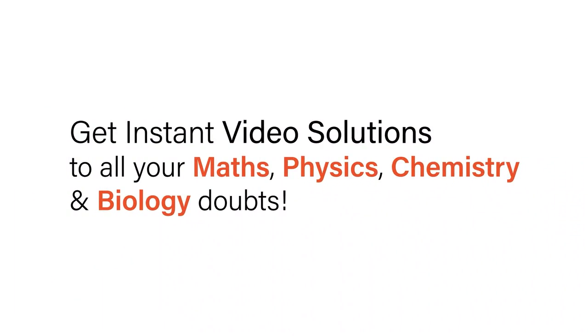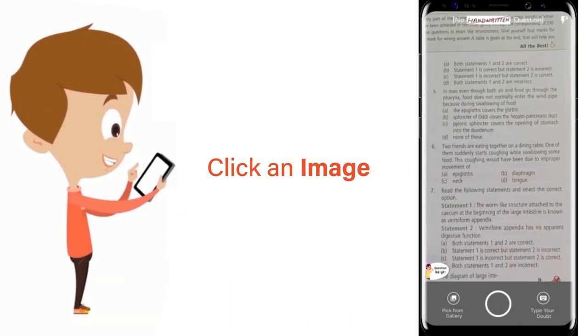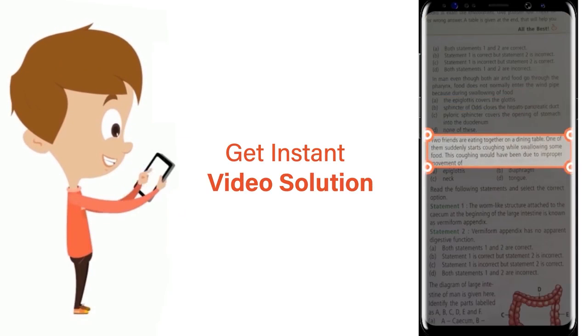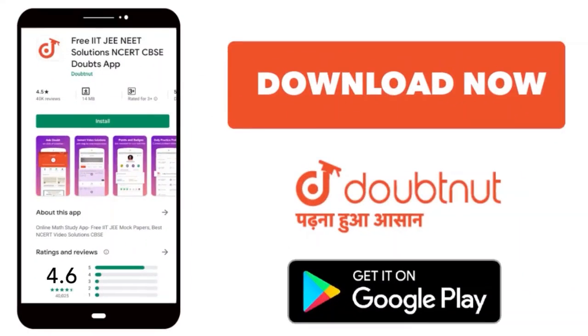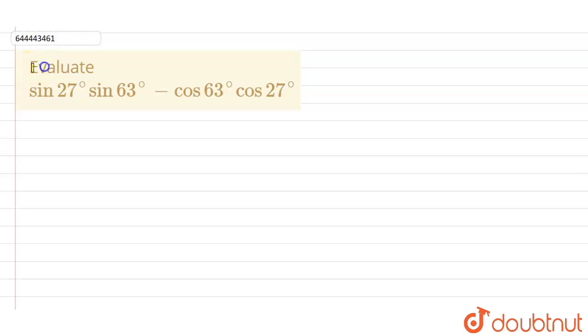With Doubtnet, get instant video solutions to all your maths, physics, chemistry, and biology doubts. Just click the image of the question, crop the question, and get instant video solution. Download Doubtnet app today. Our question is: evaluate sin 27 degree into sin 63 degree minus cos 63 degree into cos 27 degree.